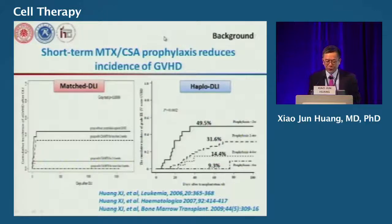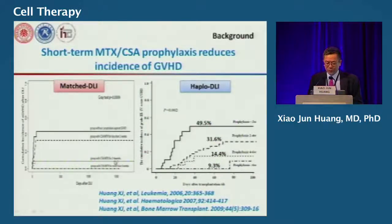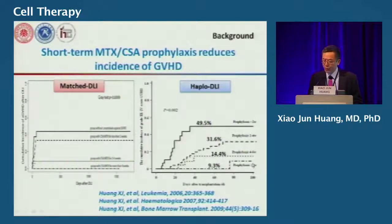From retrospective data using this modified donor lymphocyte infusion, we found that the incidence of GVHD was associated with the duration of the short-term immunosuppression agent. In HLA-identical sibling donor transplantation, if the duration of immunosuppression was two to four weeks or over four weeks, there was actually no GVHD. In haploidentical transplantation, if the duration was four to six weeks or over six weeks, the incidence of severe GVHD was very low.